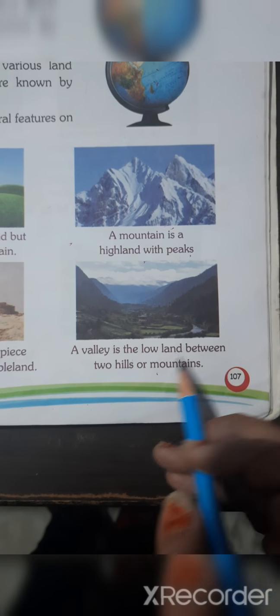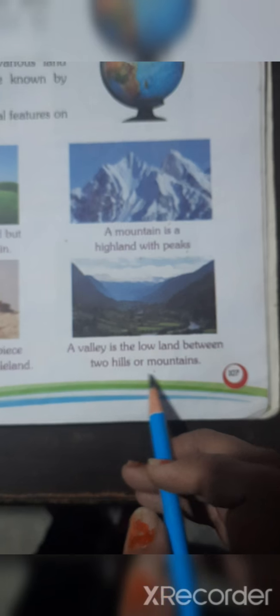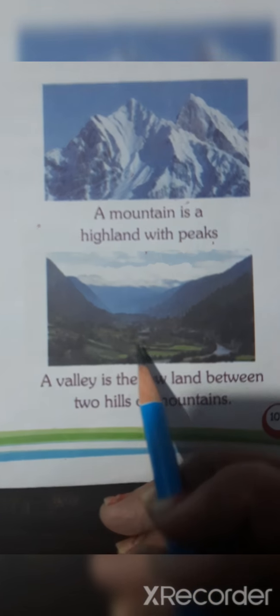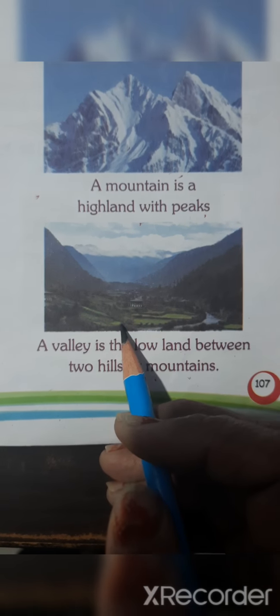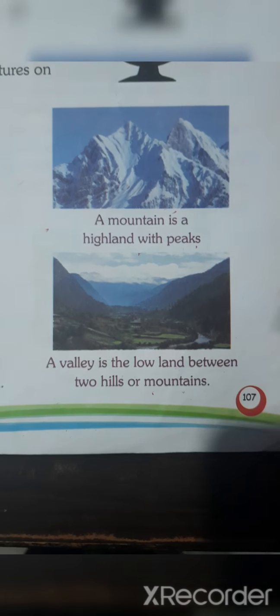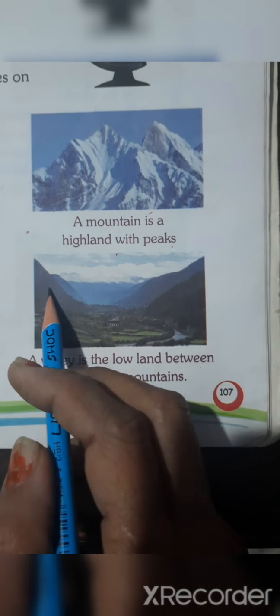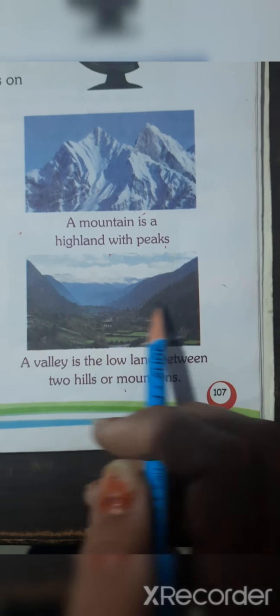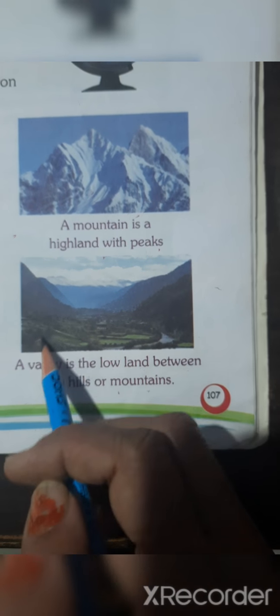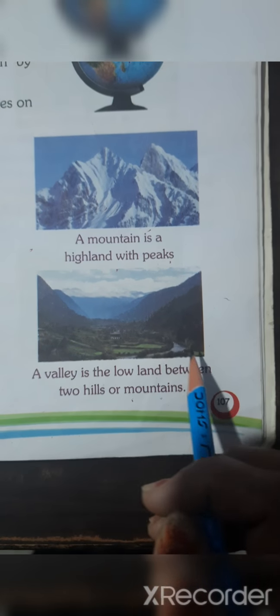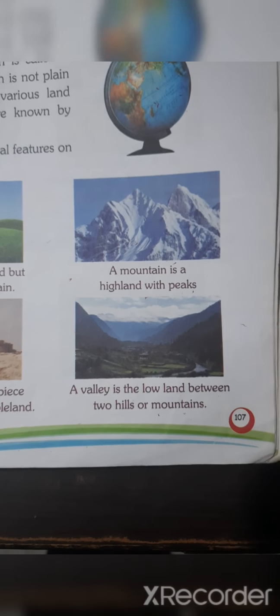A valley is the low land between two hills or mountains. When you see this picture closely, the valley is the deepest part, the lowest part between two hills or mountains. Like the Kashmir valley — it is also this kind of part.